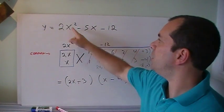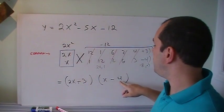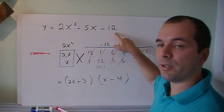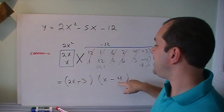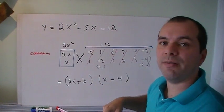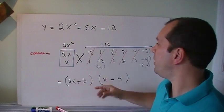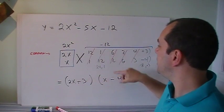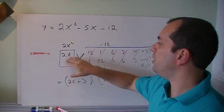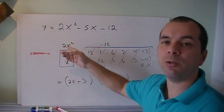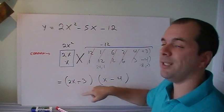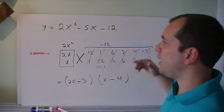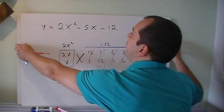2x times x is 2x squared. 3 times minus 4 is minus 12. That worked out. And now the inner 3x minus 8 gives me minus 5. And you notice that that's exactly what we're doing. We created these last two numbers to make it equal to 12. We created the first two numbers to make them equal to 2x squared. And then this cross multiplication is just like the inside and the outside.